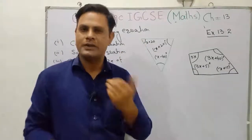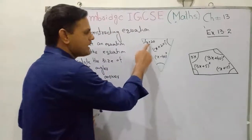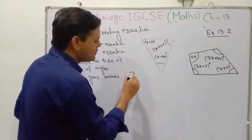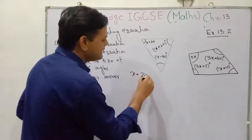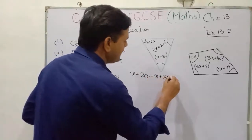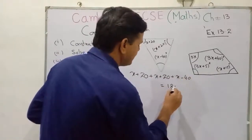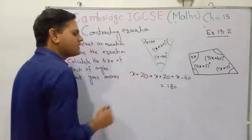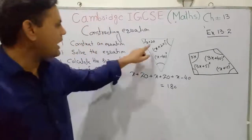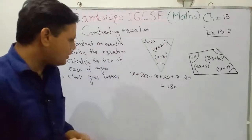The total angles in a triangle is equal to 180°. Here our angles are x + 20°, x + 20°, and x − 40°. The sum of these three angles in our triangle is equal to 180°. The sum of angles in any triangle is equal to 180°, so you add these three angles and set them equal to 180.